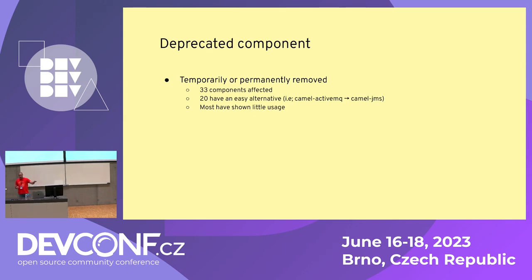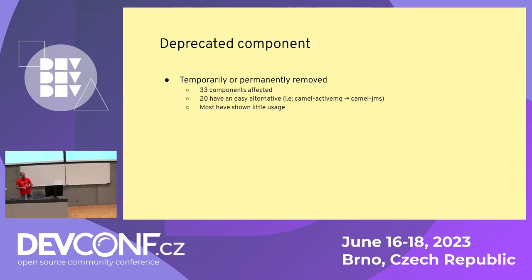One important point to highlight is that in some cases these removals are temporary. For example, as I mentioned, Camel ActiveMQ — the community is already working on resurrecting this component based on a newer version that supports Jakarta 10. So it might be that this number of 33 components affected will be reduced as the development of Camel 4 progresses.